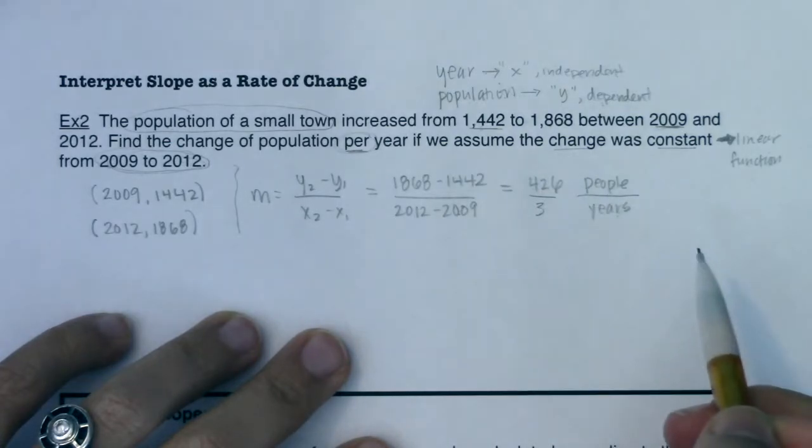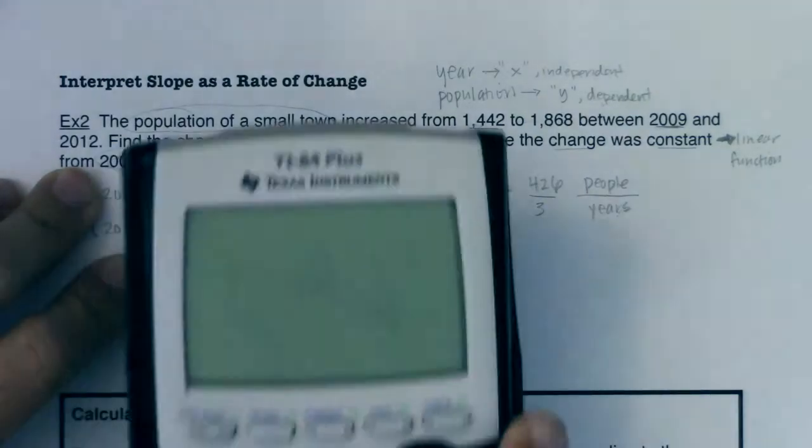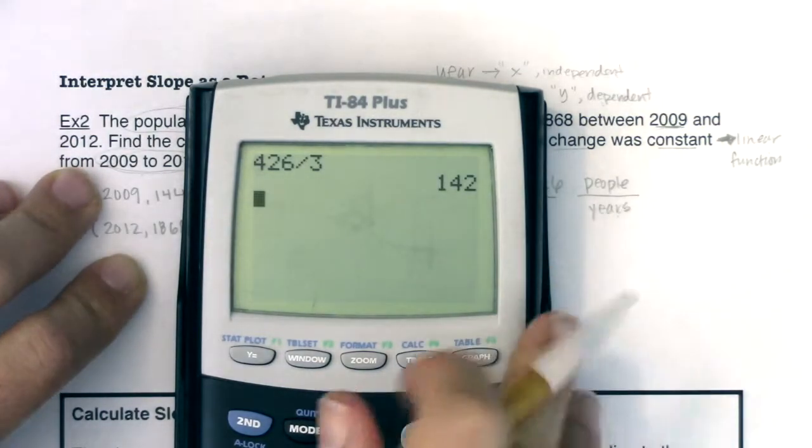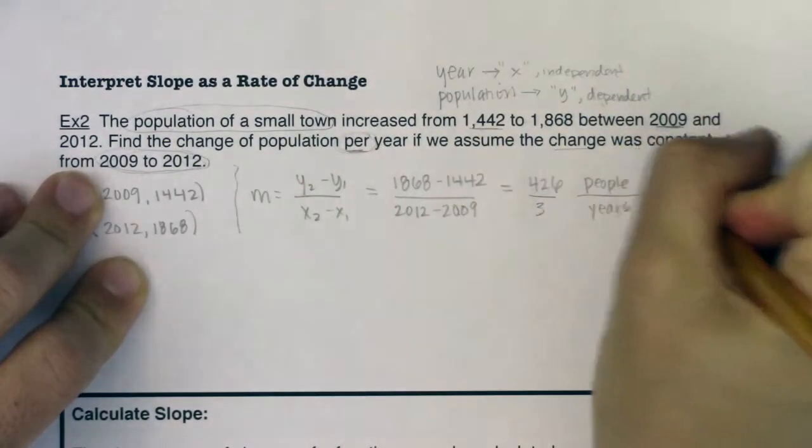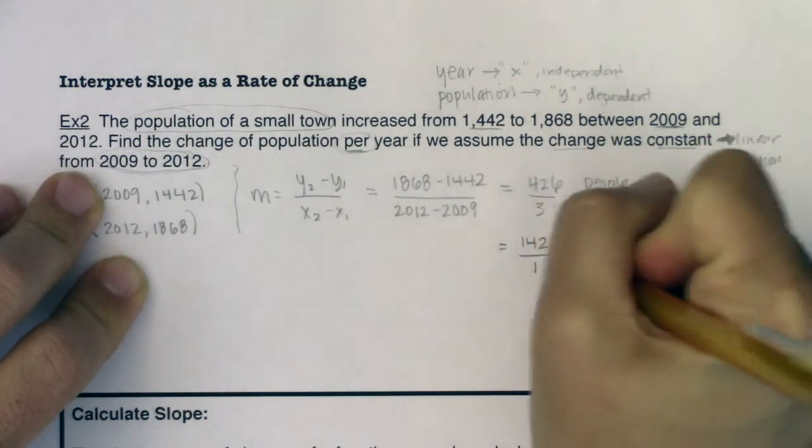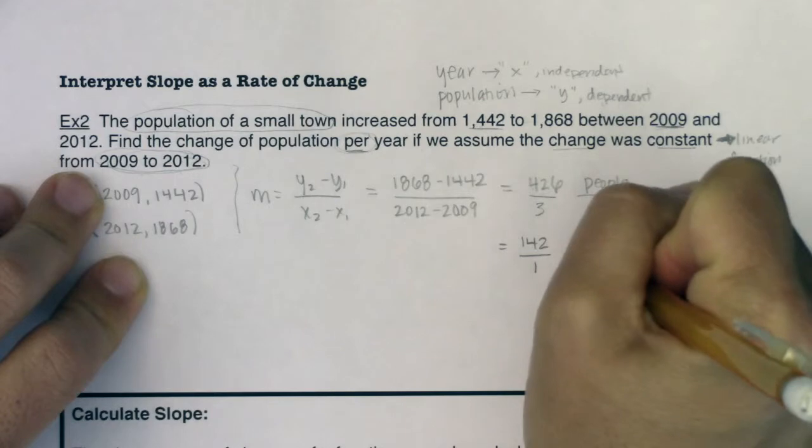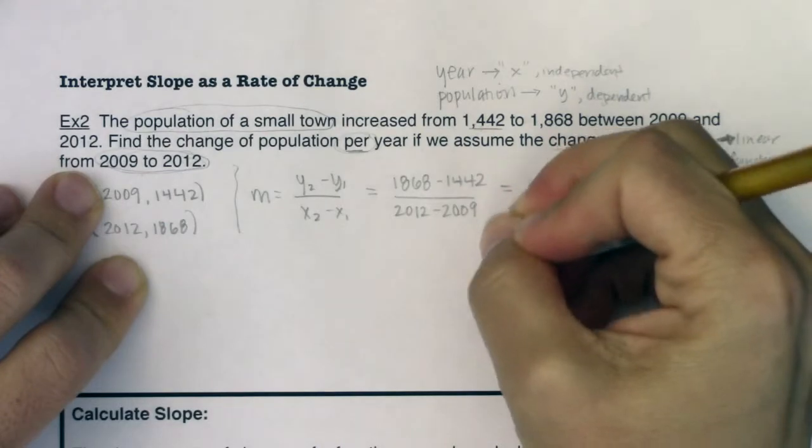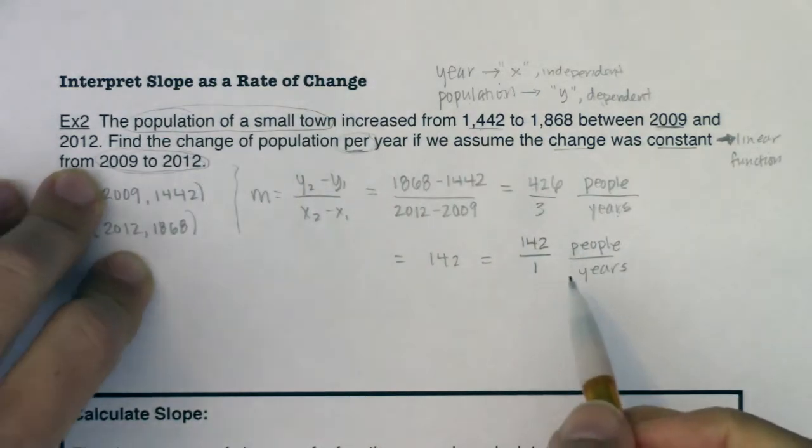Now we're not going to leave this as is - we're going to simplify it. So let's see what 426 divided by 3 is, and it happens to be a whole number. Great, it's 142. If it was a decimal, that would have been fine as well. So this is actually going to be - I'll write it over here - this is going to be 142 over 1, basically. You can write it just as 142, but I want you to again hear this: people in ratio to years. Anytime you have a number - even if I had just written this, let me erase this - maybe I just said initially this was the number 142. Well, any number can be written as a unit ratio, and when we say unit ratio, we mean that number in ratio to itself. Hold on, I'm going to sneeze. Excuse me.